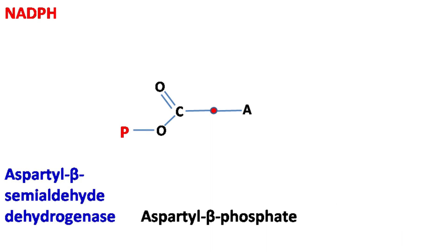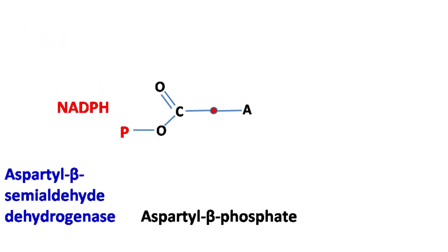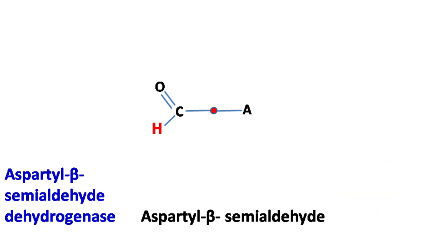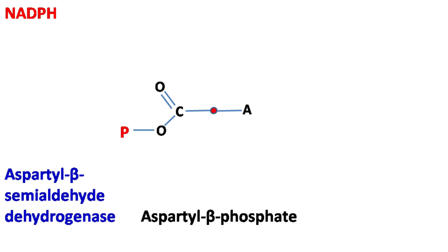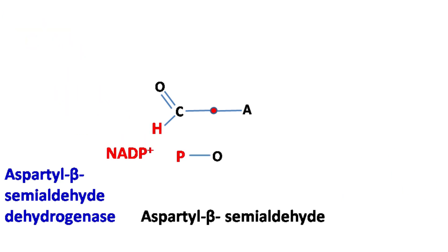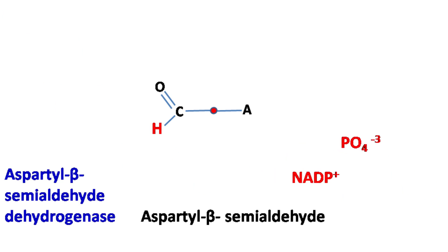Aspartyl beta semialdehyde dehydrogenase removes this phosphate with the help of NADPH, which gets converted into NADP. This results in the formation of aspartyl beta semialdehyde.